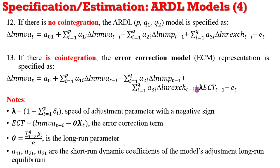Lambda is the coefficient or parameter of the adjustment term — that is the speed of adjustment — and it must come out with a negative sign after estimation. It shows that there is convergence in the long run. If it comes out with a positive sign, it means the model is explosive and there is no convergence. This is the mathematical representation of lambda. The error correction term captures the long-run relationship in the model. Theta is the long-run parameter, while the coefficients a1i, a2i, and a3i are the short-run coefficients.